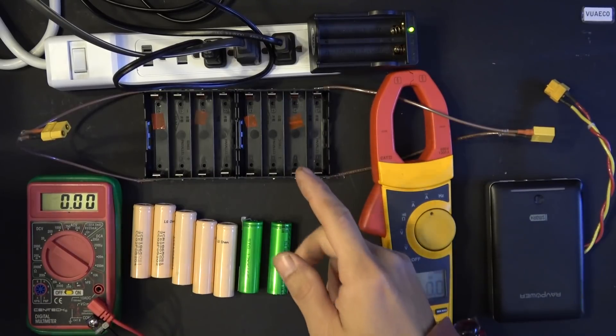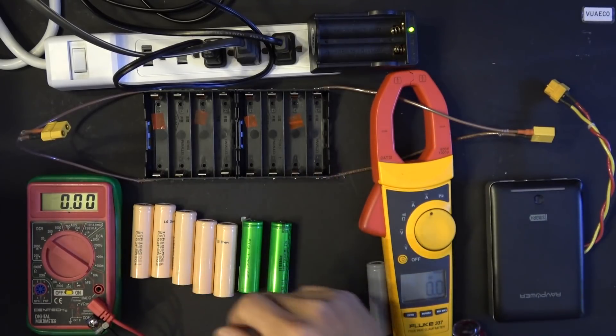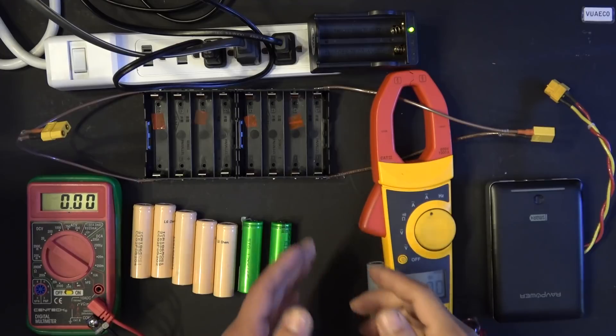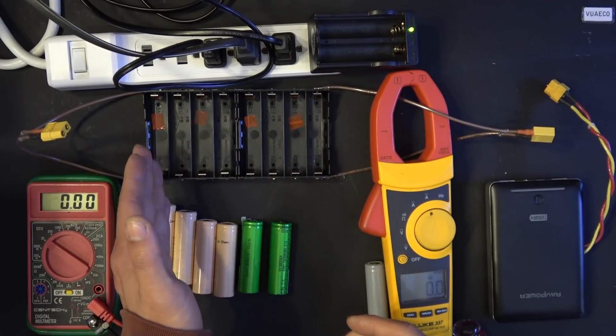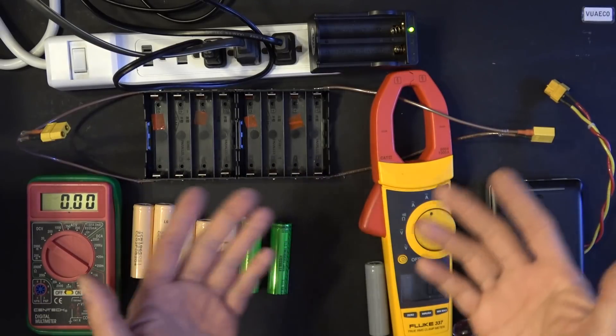That's basically the way I parallel charge eight cells at the same time. So I just do one at a time until I get to eight, and by the time I get to eight, the first one is ready to go.